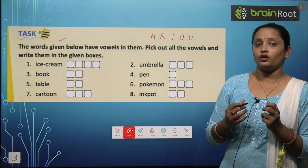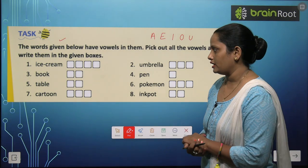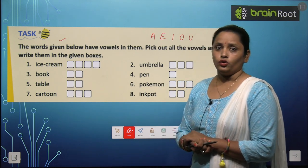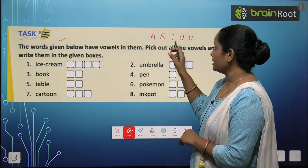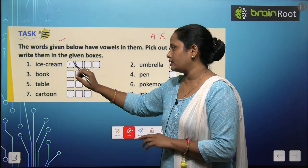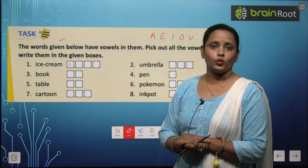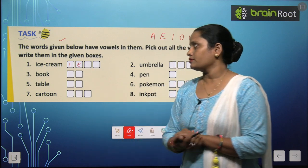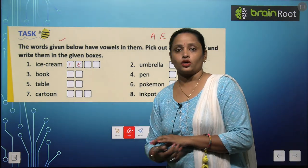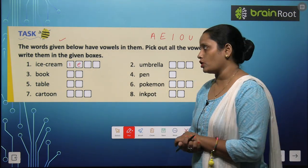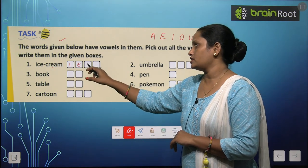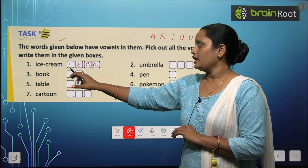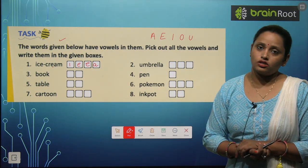The first word is ice cream. I — is this a vowel? Yes. Let's write I. Next comes C — is this a vowel? No. Next comes E — yes, it is a vowel. Let's write it. Next comes C — consonant. Next is R — also a consonant. Next is E — a vowel. And the next letter is A — again a vowel. And the last letter is M — a consonant. So the vowels in ice cream are I, E, E, A.